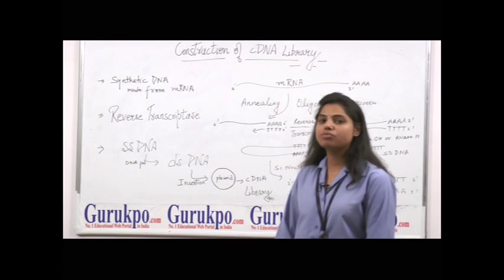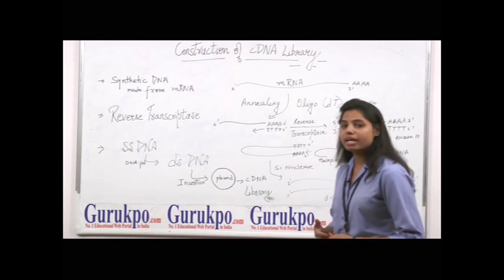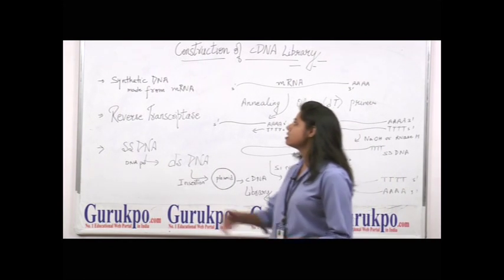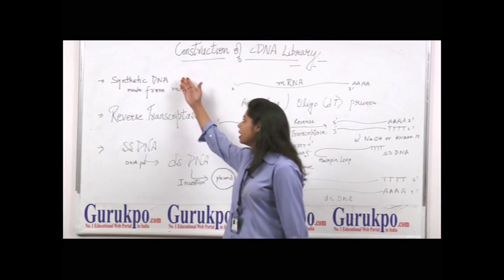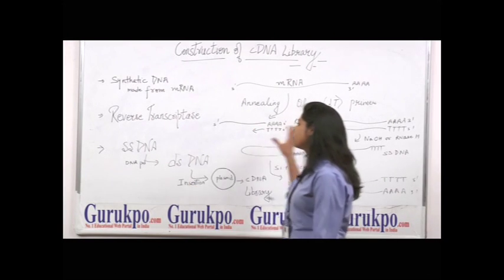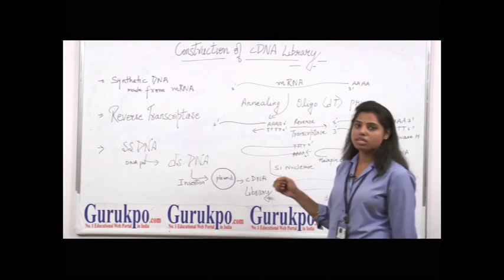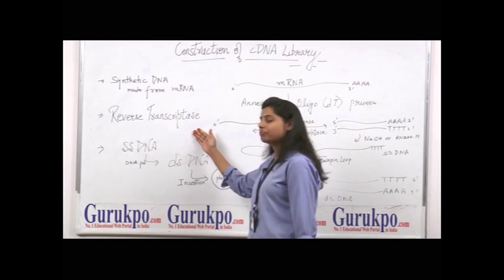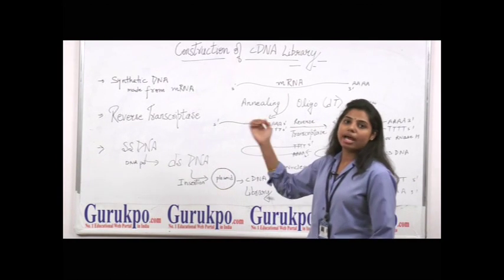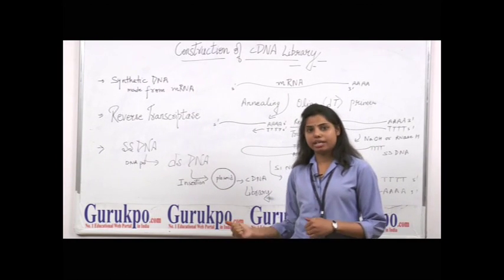First of all, what is cDNA? cDNA is actually a complementary DNA, or a synthetic DNA made from mRNA. In this whole process, the enzyme used is reverse transcriptase. Reverse transcriptase actually converts the mRNA into cDNA.